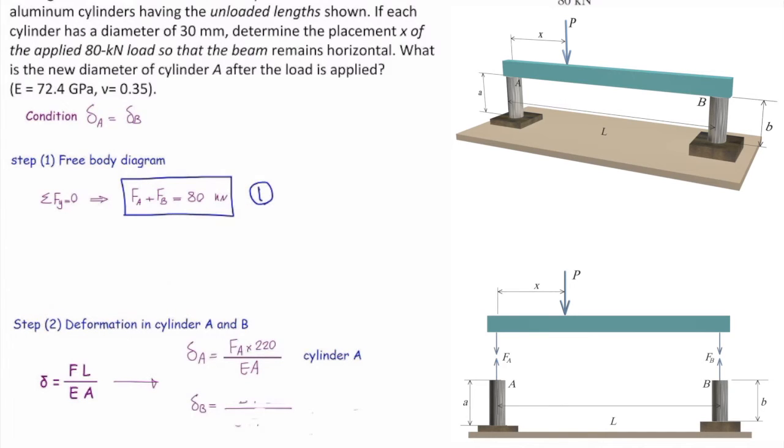Similar to that, we can write down equation of deformation in cylinder B. Force in element B times the length, which is 210, divided by EA. That is total deformation in cylinder B.